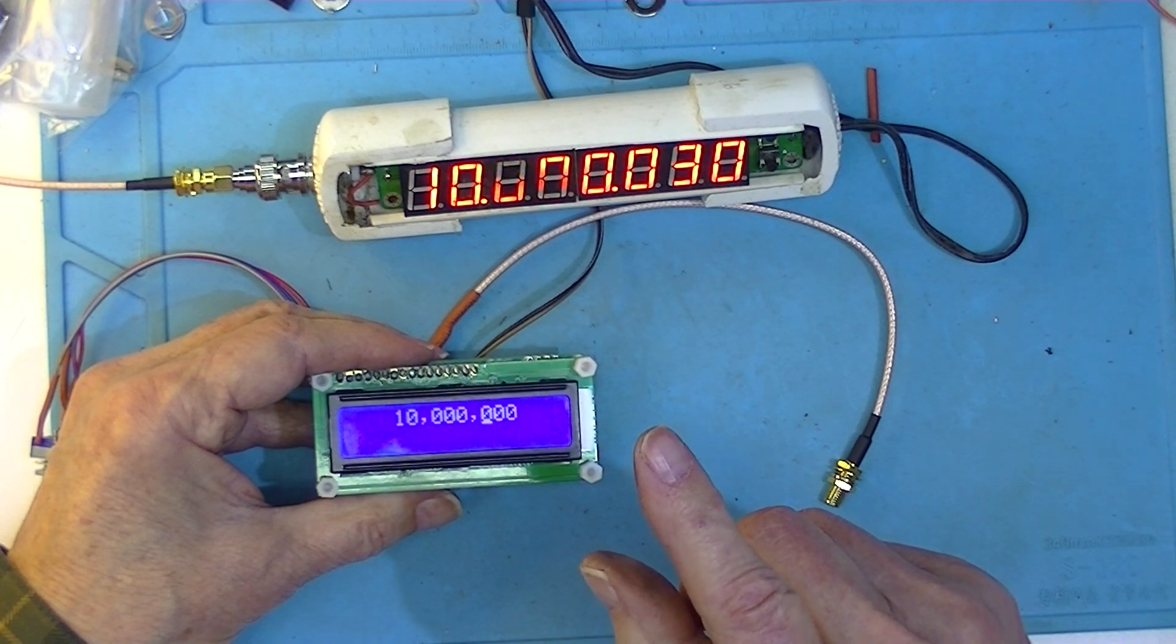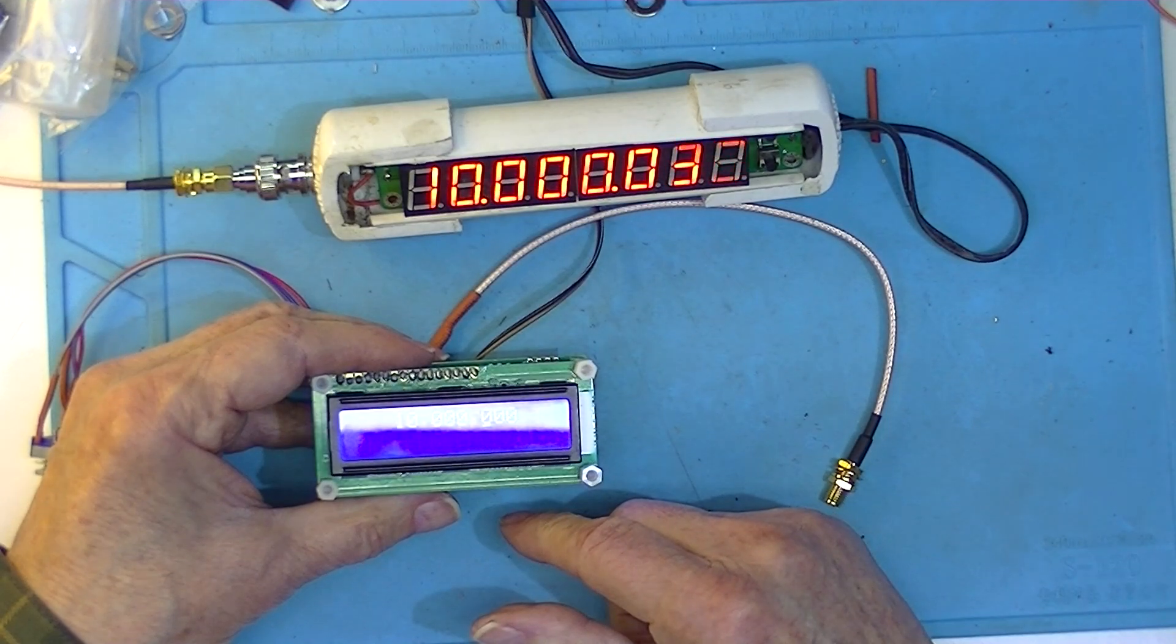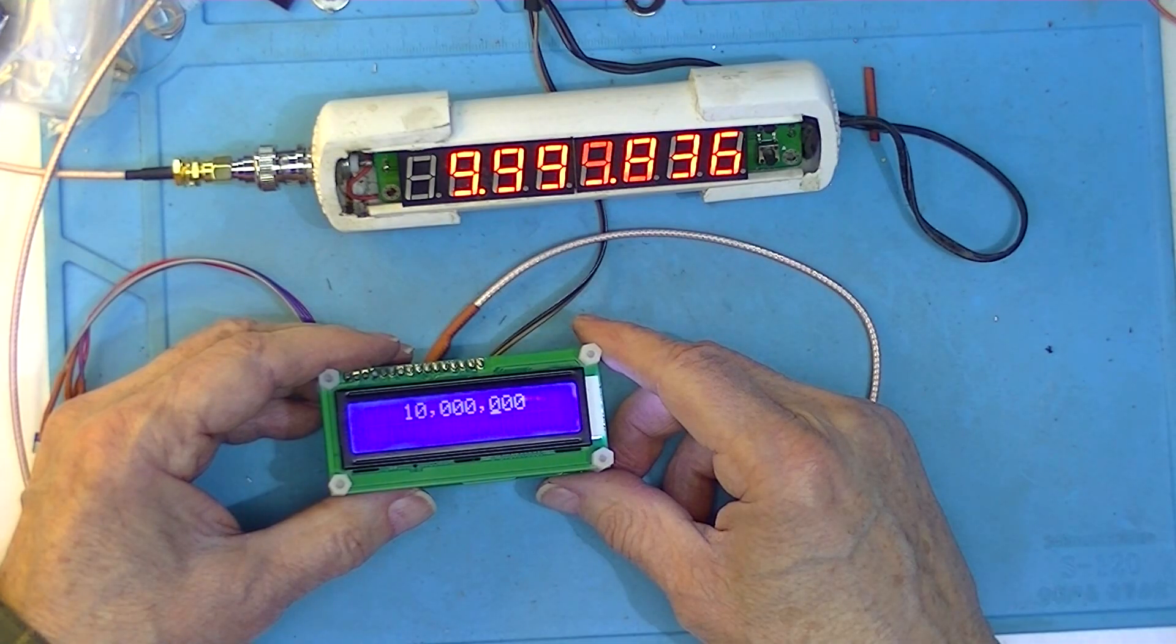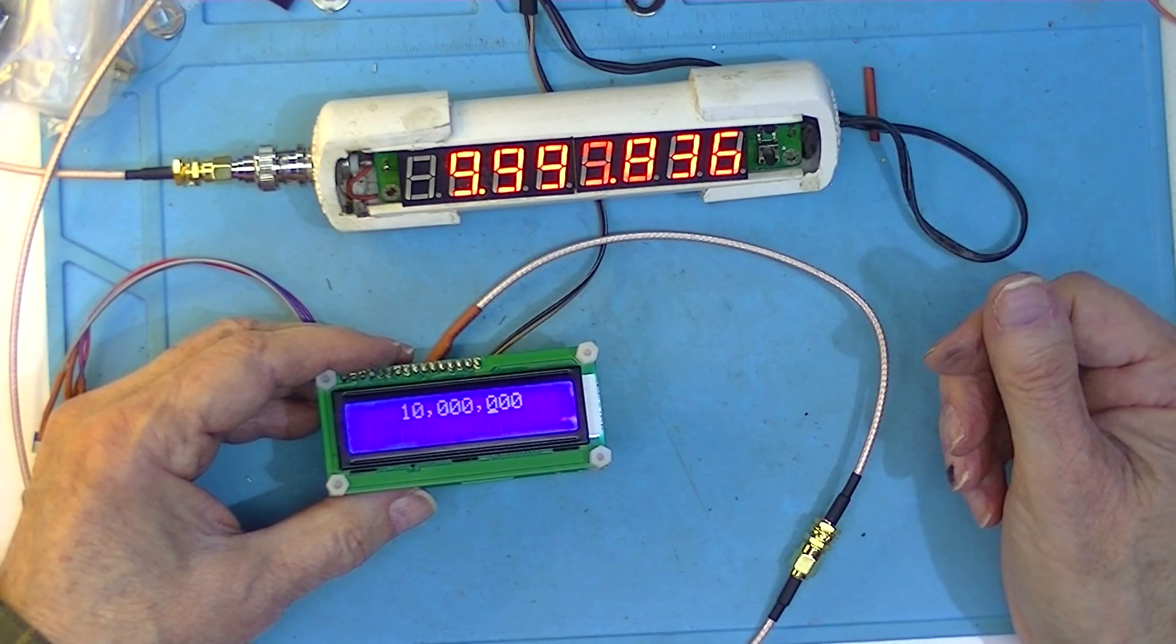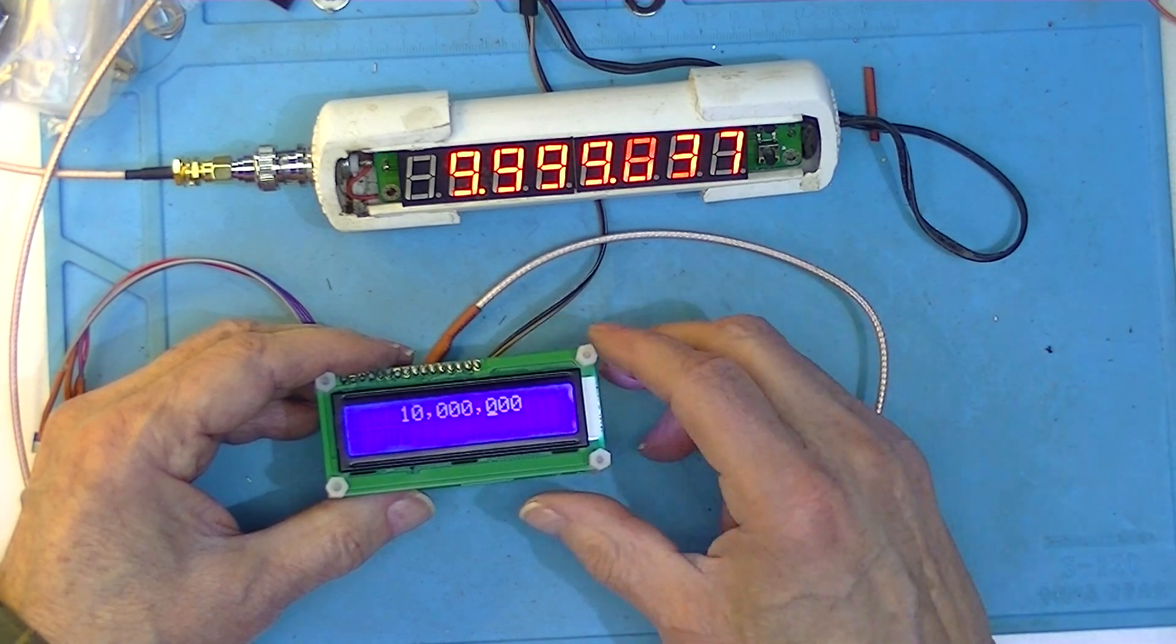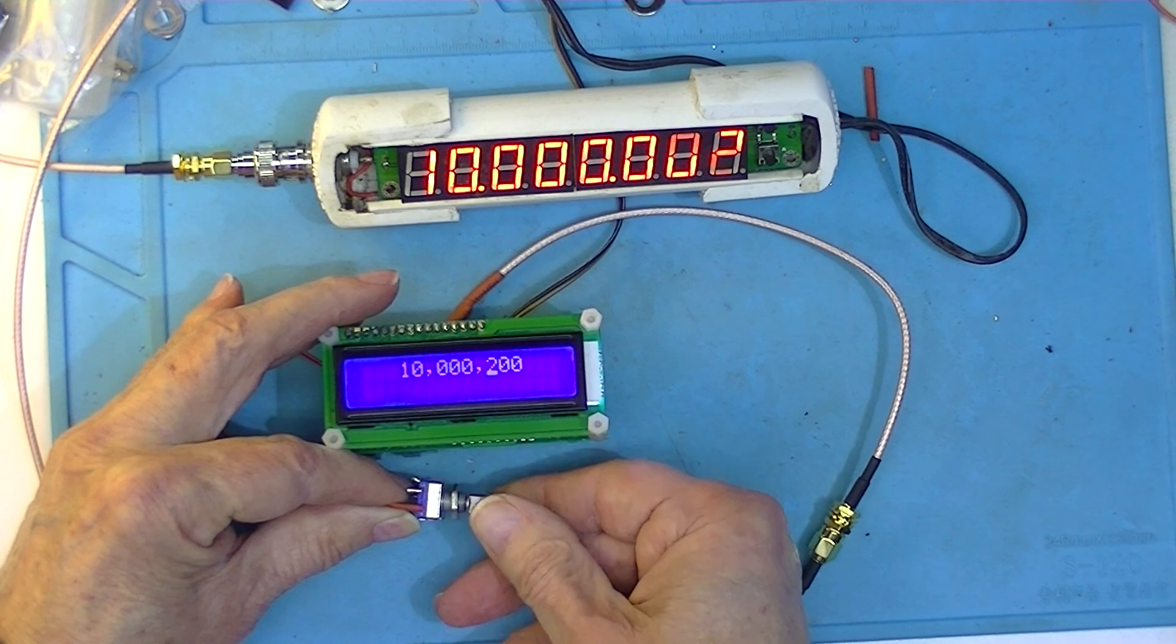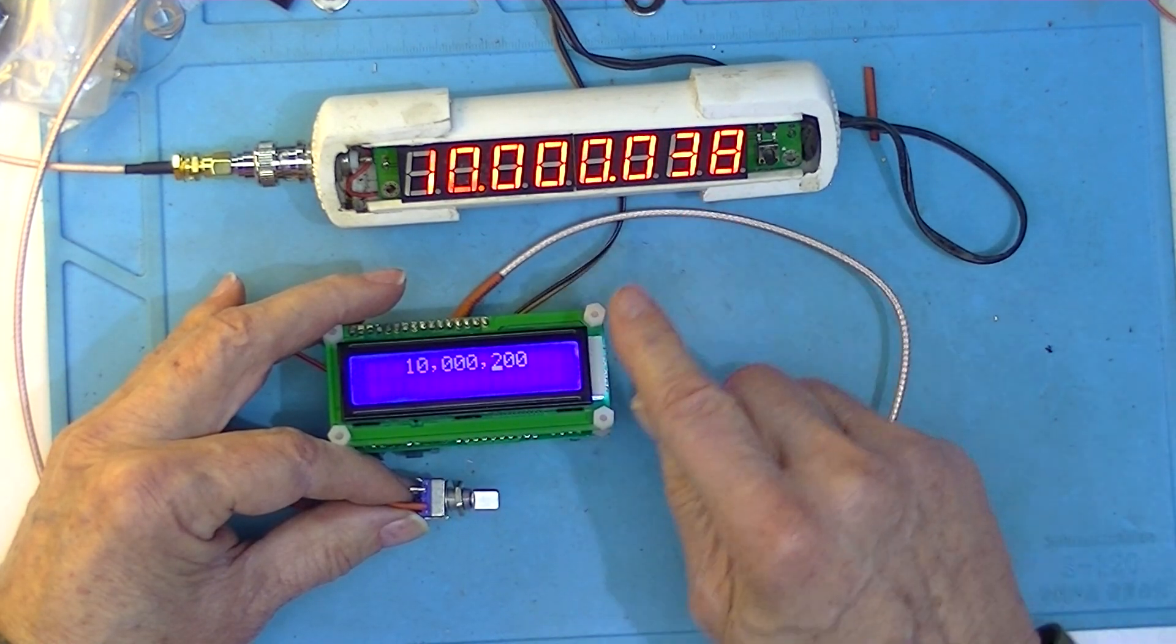And now what I'm going to do is swap inputs to this frequency meter from the TCXO standard to this. So I'm guessing it's about 200Hz low. It is about 200Hz low.